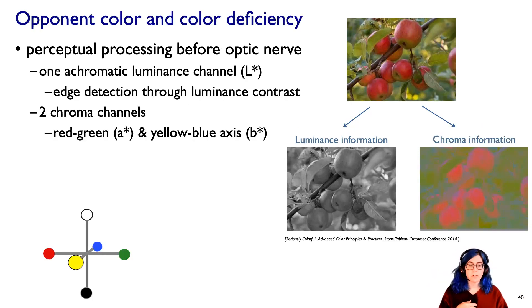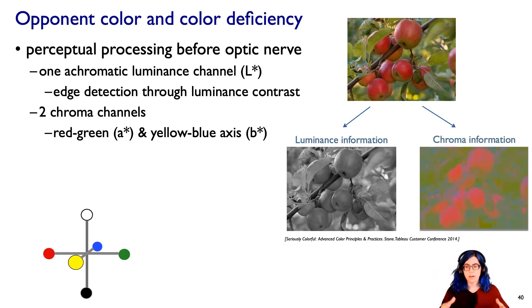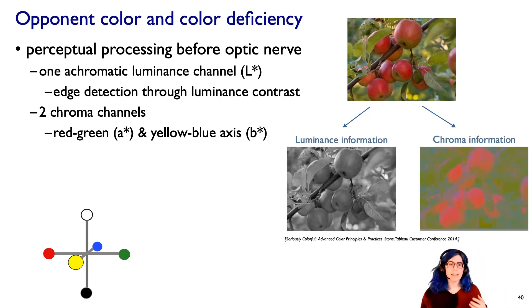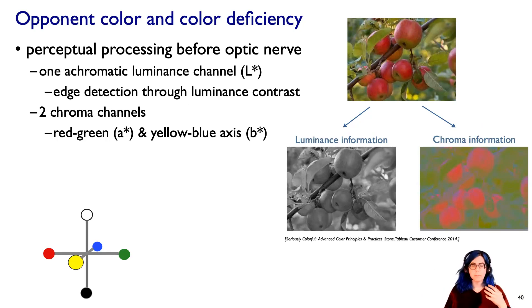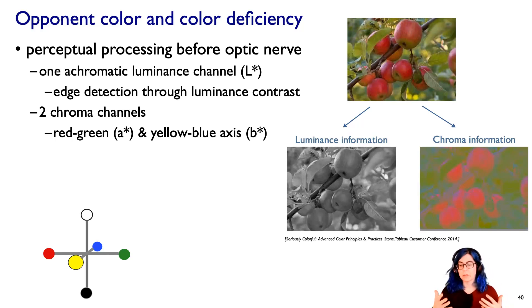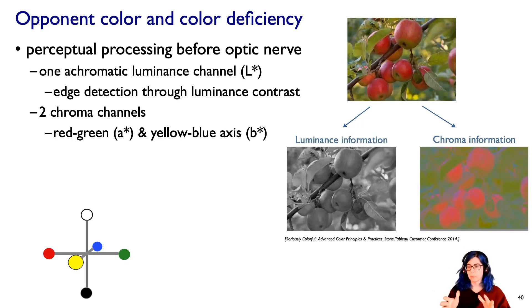In the context of color deficiency, what's useful to know is that your entire visual system and brain — actually even before it hits the brain, back before the optic nerve — splits what we perceive into three channels. There's a luminance channel that has no color information; it's only black and white, it's achromatic. That's where we're doing all that edge detection.